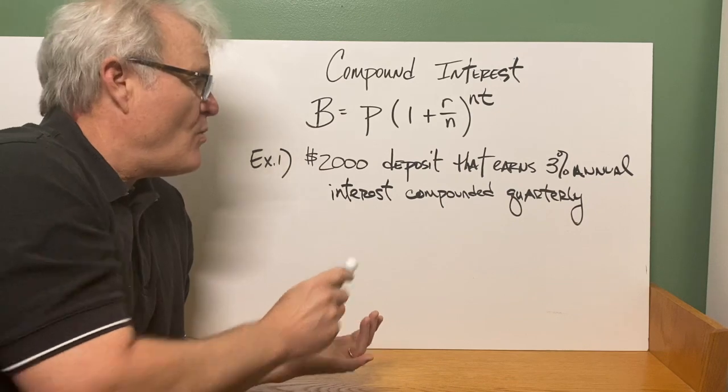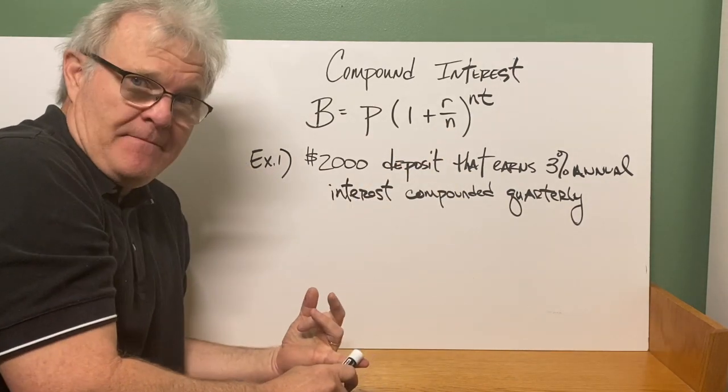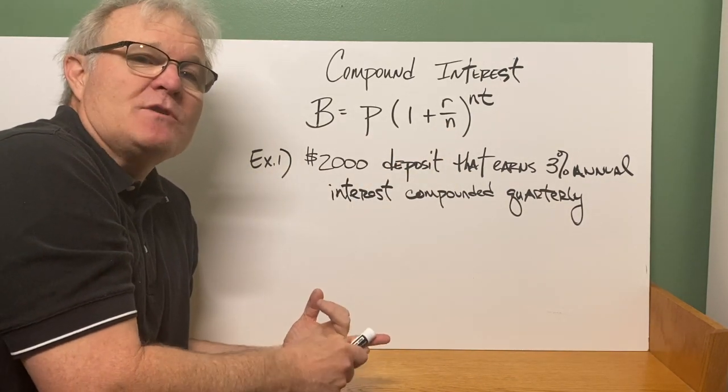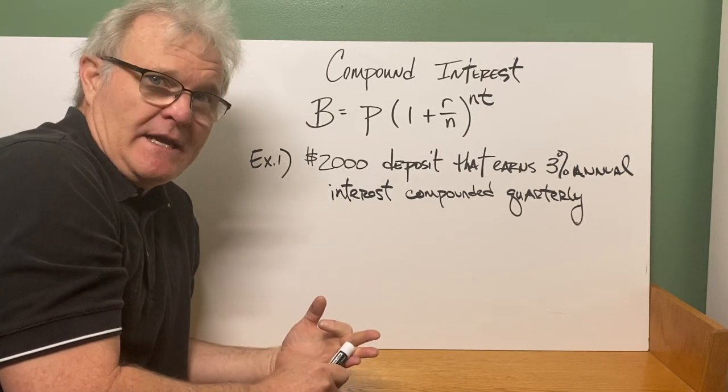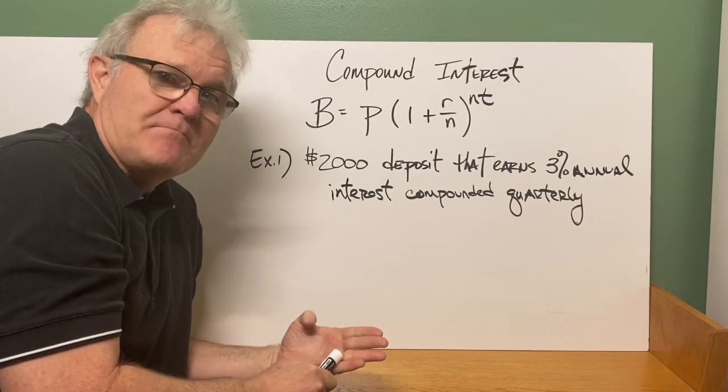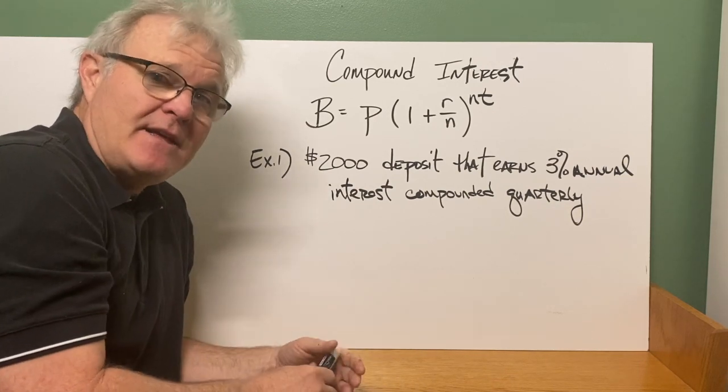That could be 1 if it was annually, 2 if it was semi-annually, 4 if it's quarterly, 12 if it's monthly, 365 if it's daily.